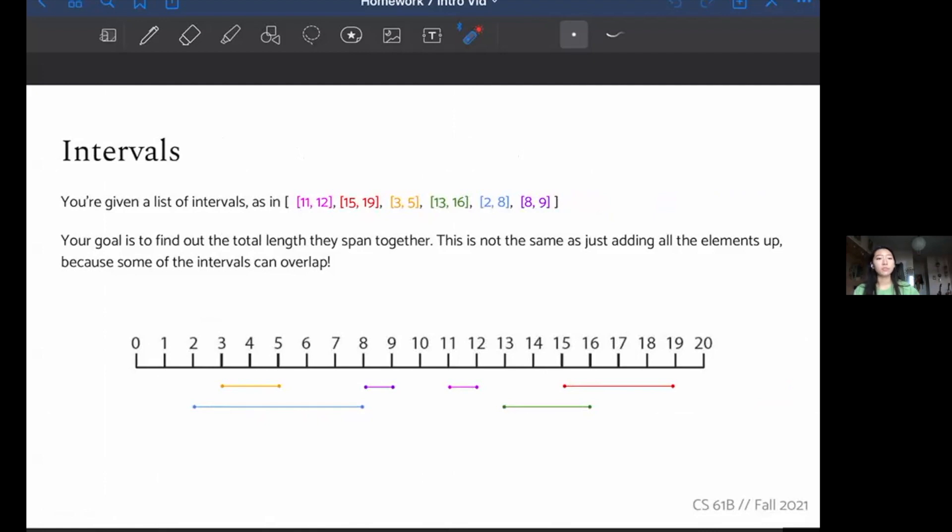So the first one is intervals. In intervals, you're given a list of intervals, or in other words, an array of two-item arrays. These intervals we can imagine define a range. So if we had the intervals [11, 12], [15, 19], [3, 5], [13, 6], [2, 8], and [8, 9], on the number line they might look like something like this, right? We see 11, 12 is the interval from 11 to 12. Whereas let's see, 2 to 7 or 2 to 8 is this interval right here. So your goal is to find out the total length all the intervals span together.